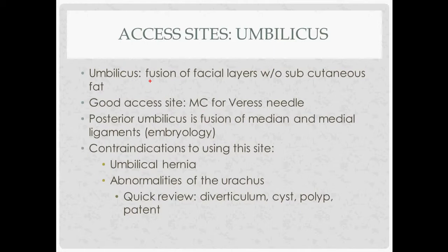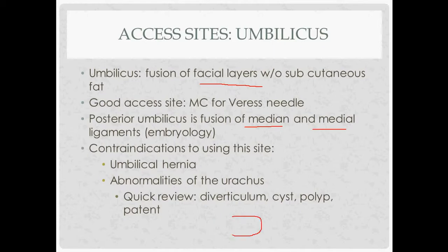Accessing the belly button. The belly button is the most common access site — it's the fusion of fascial layers without subcutaneous fat, making it a good access point and most common for the Veress needle. The posterior part is the fusion of the median ligament (from the urachus), the medial umbilical artery remnants — all those folds meet at the belly button. Contraindications to this site include umbilical hernia or urachus abnormalities. The urachus drains the fetal bladder and normally closes to form the median ligament. Abnormalities include a urachal cyst (failure of mid-fusion), polyp (failure of fusion at the belly button), diverticulum, or a patent urachus with urine coming out of the belly button.